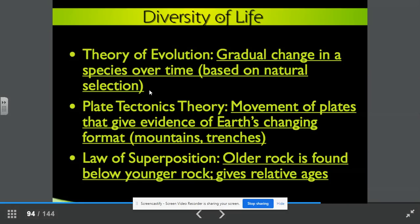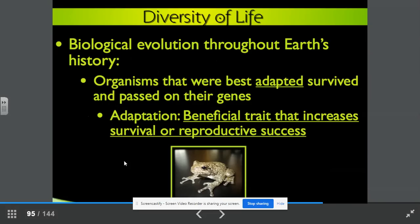Plate tectonics theory, this is the movement of plates that give evidence of Earth's changing format. For example, mountains, trenches. The law of superposition tells us that older rock is found below younger rock and gives relative ages. Biological evolution throughout Earth's history. Organisms that were best adapted survived and were able to pass on their genes to their offspring. Adaptation. It's a beneficial trait that increases survival or reproductive success in a species.